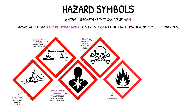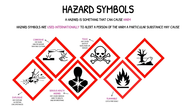Flammable — as the name suggests, a substance that is flammable can catch fire easily. Harmful to the environment — these substances may cause damage to animal and plant life, so it's important that they are disposed of properly.